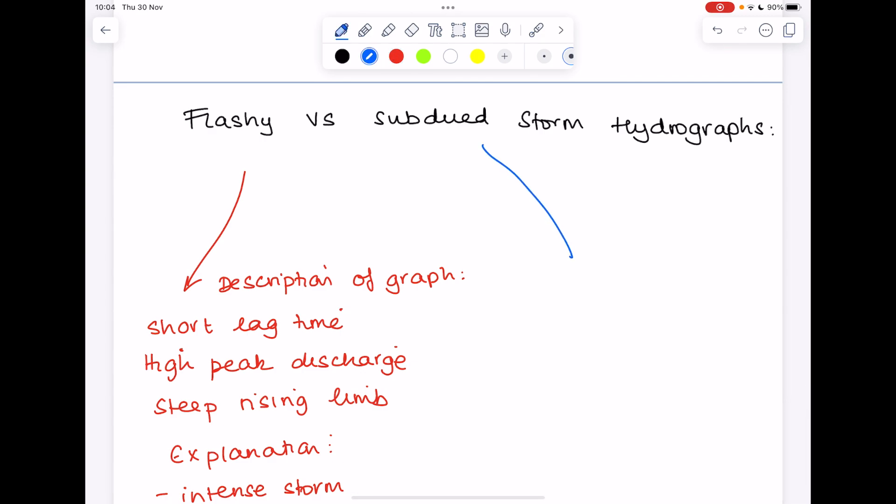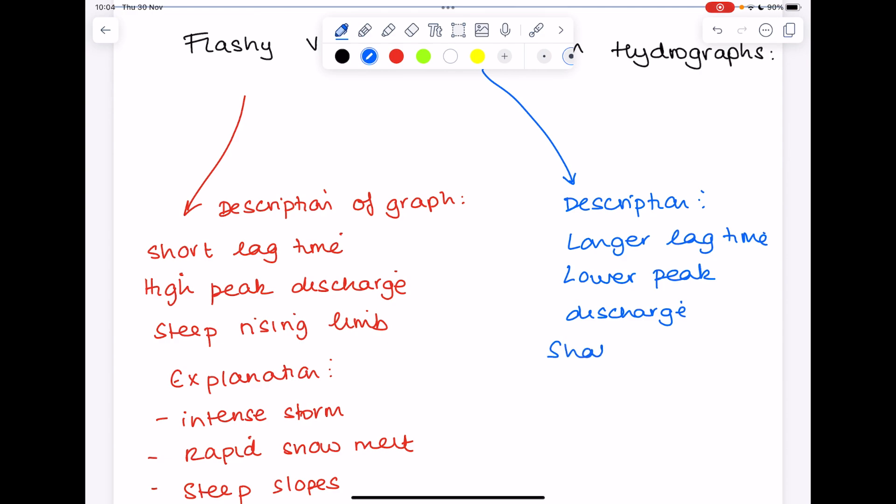If we look at the subdued storm hydrograph then, what do we expect to see on the graph this time? As I've already said, you'll have a longer lag time, lower peak discharge, shallower rising limb.